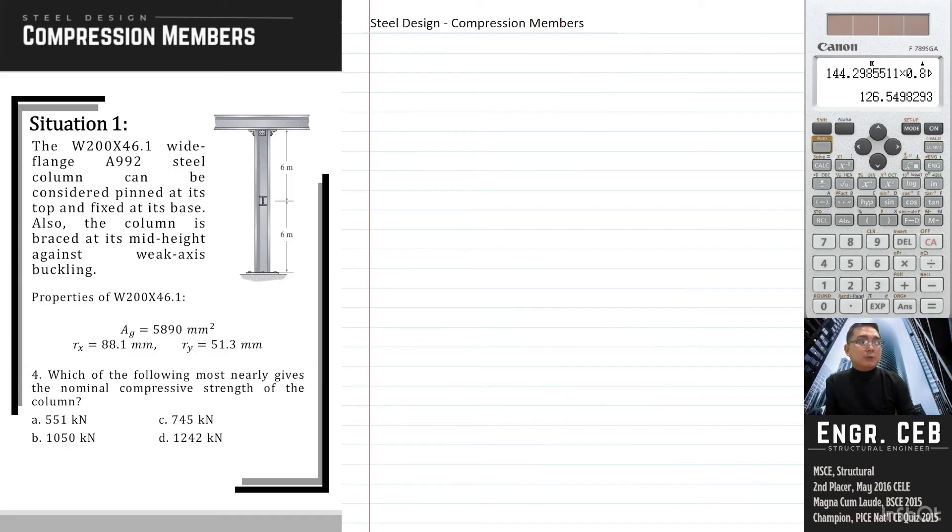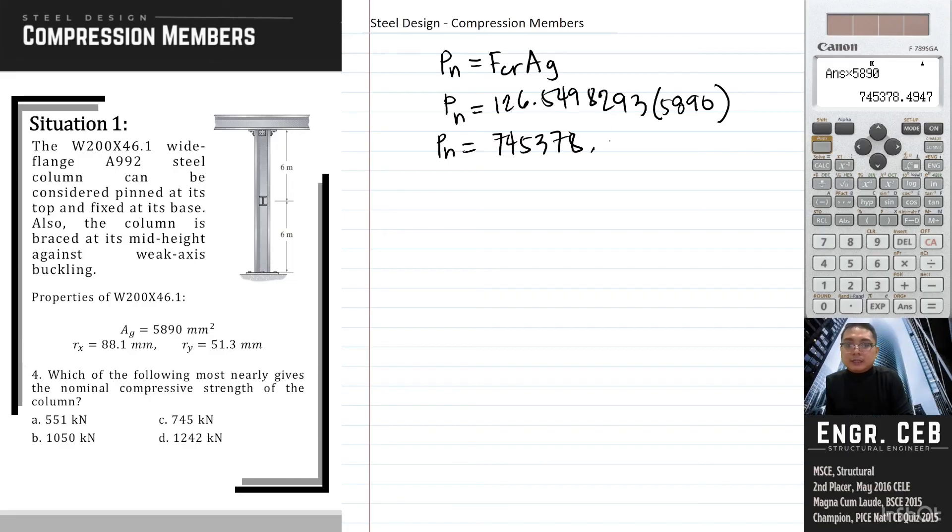Problem 4: Which of the following most nearly gives the nominal compressive strength of the column? For the nominal compressive strength of the column, that is simply Fcr times A sub G. We already know the value of Fcr, that is 126.550 MPa. The value of the gross area is 5890. Therefore, we can now compute for the nominal compressive strength, and that is 745,378 N. Dividing this by 1000 gives us 745.378 kN.